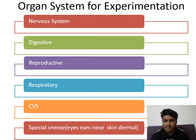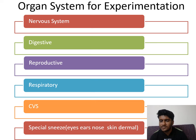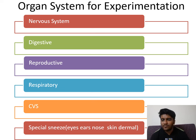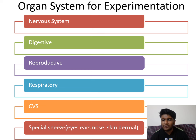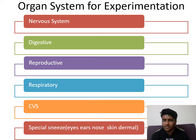For organ system experimentations, there are different organ systems for different diseases. Nervous system — neurodegenerative diseases like Alzheimer's, Parkinson's, Huntington's, ALS, multiple sclerosis. Digestive system — peptic ulcers, constipation, diarrhea. Reproductive system — infertility, embryonic toxicity, testis, ovaries. Digestive system organs include small intestine, large intestine, stomach. Nervous system includes brain and spinal cord. Respiratory system involves pulmonary drugs for COPD and asthma. CVS includes angina pectoris, arrhythmia, myocardial infarction, hypertension. Special senses: eyes, skin, nose.